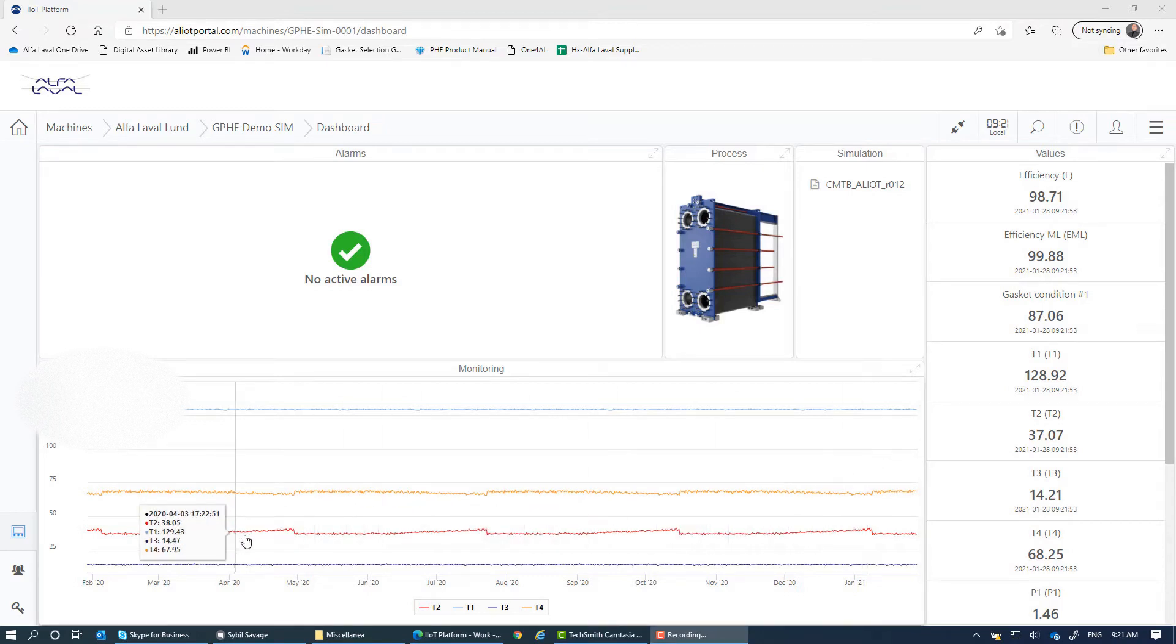What you have to pay attention to actually are those graphs that if you remember the graph that we had on the whiteboard, they are kind of the same but reversed. Because in this case you see that the pressure drop increases, increases, increases, increases. Then you run a CIP cycle and then goes down and then increases, increases, increases and you run a CIP cycle and then goes down.